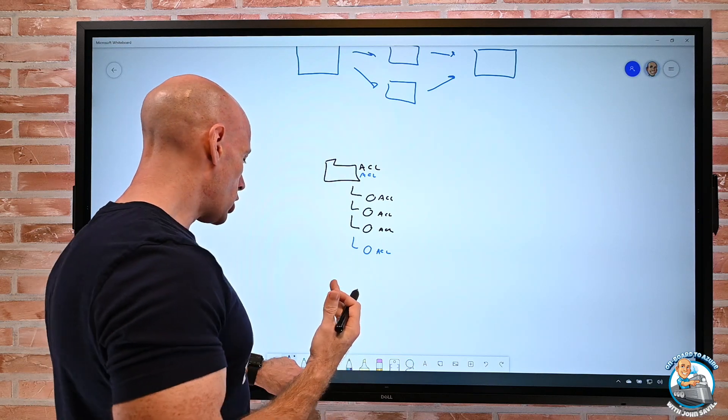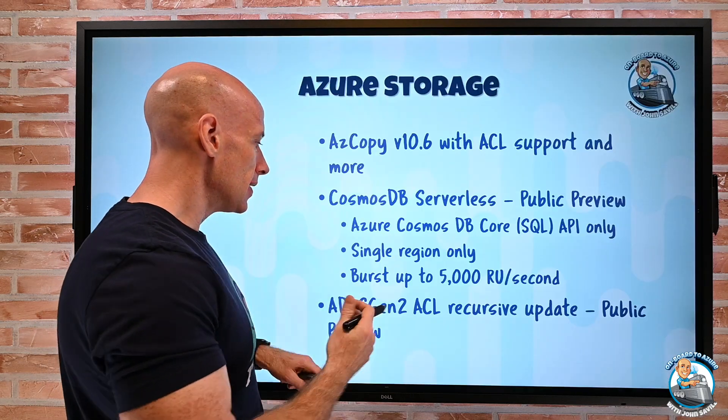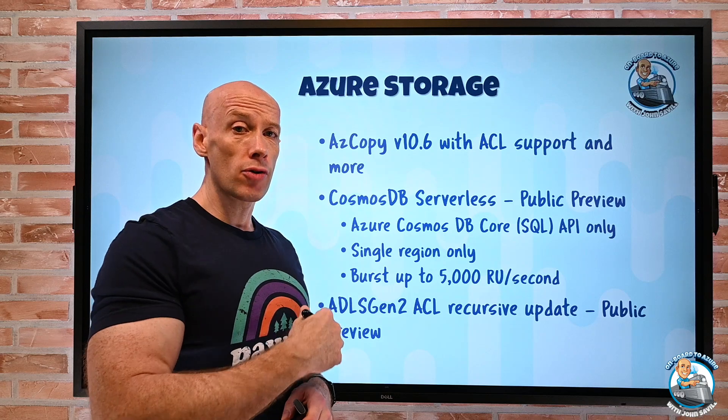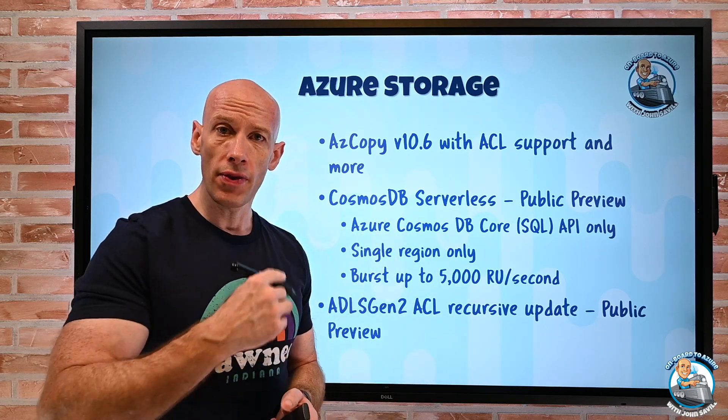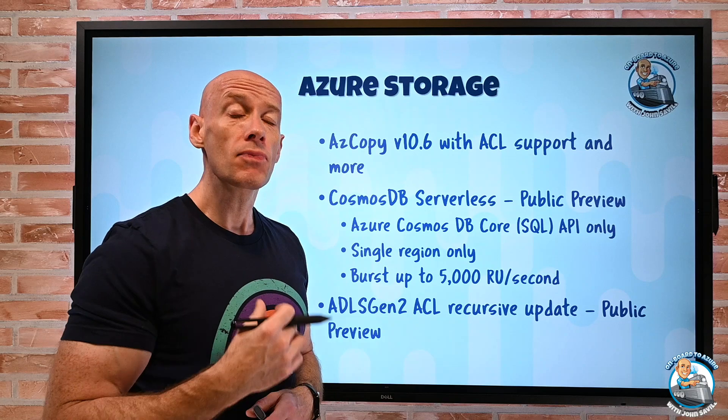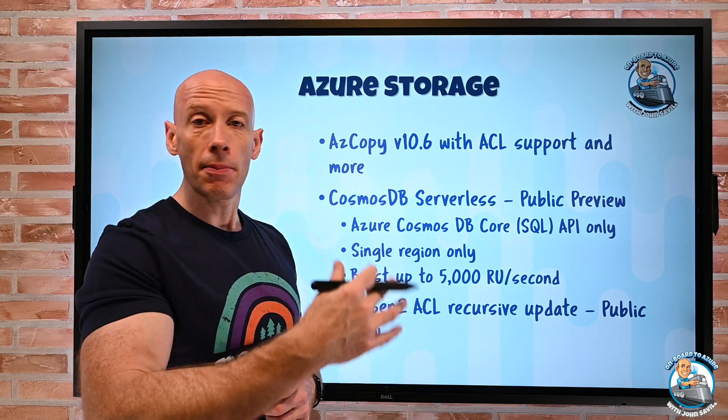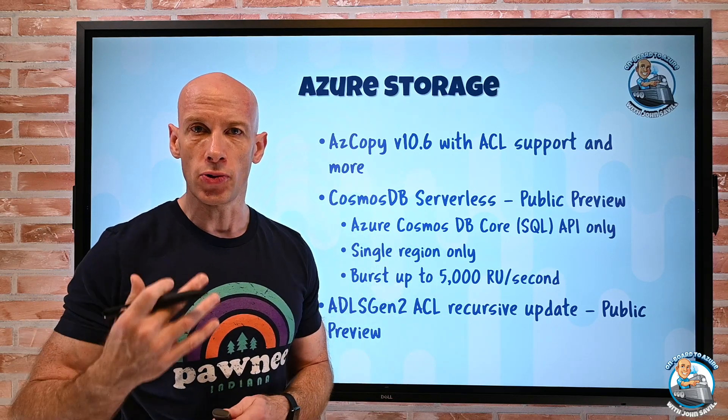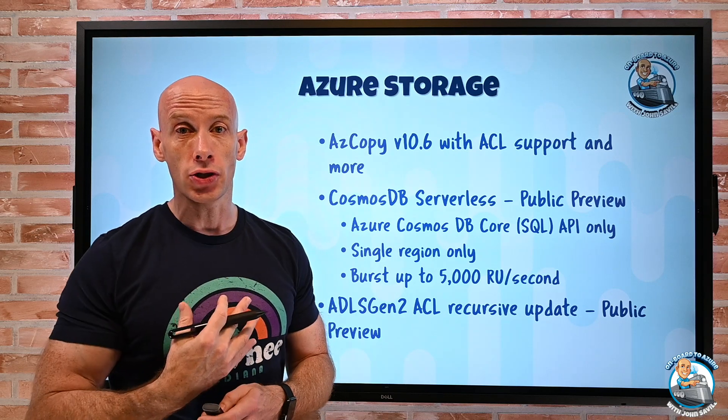And it will automatically go and update all the ACLs from all the child objects as well. So that's what this new recursion capability does. Now, I can just say, I want to recursively update the ACLs on this parent object, and it will automatically set, update, remove from all the child objects for me. I don't have to go and do that recursion anymore.